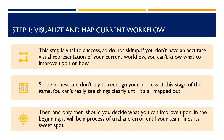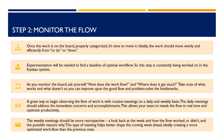In the beginning, it will be a process of trial and error until your team finds its sweet spot. In step 2, you should monitor the flow. Once the work is on the board, properly categorized, it's time to move it. Ideally, the work should move evenly and efficiently from to do to done. Unfortunately, real life never quite fully lives up to an ideal, and much experimentation is needed to find a baseline of optimal workflow. And, of course, things always come up, so this step is constantly being worked on in the Kanban system.